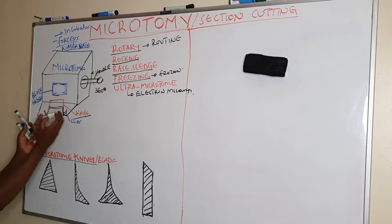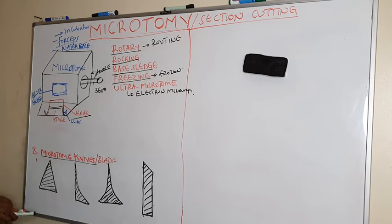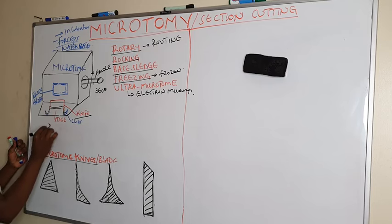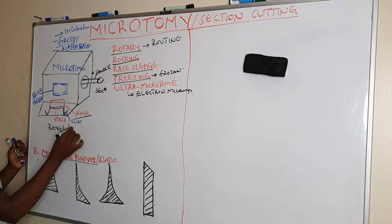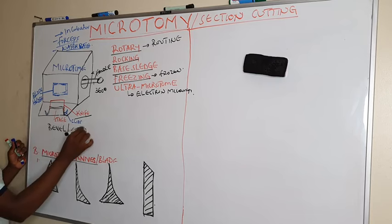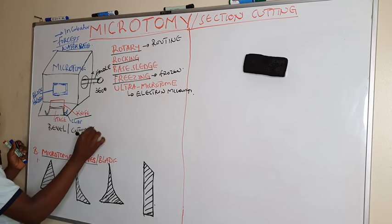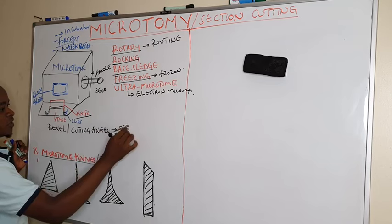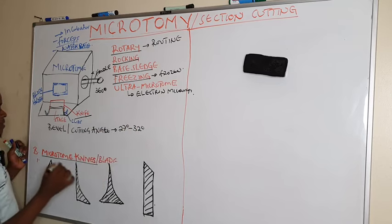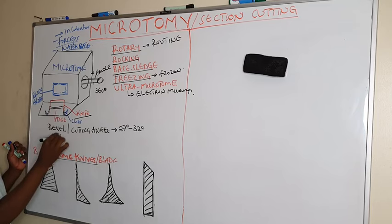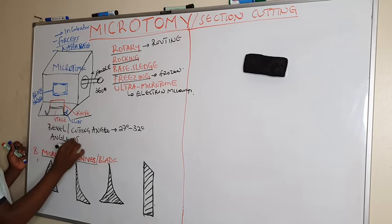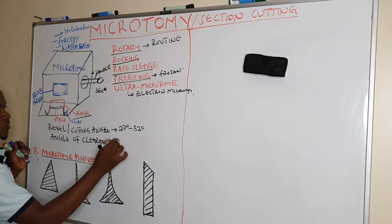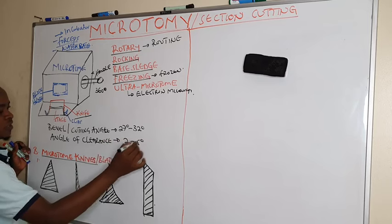When adjusting or fitting the knife on the stage, there are angle terms we use. The bevel angle, also called the cutting angle or facet angle, is always between 27 degrees to 32 degrees. The angle of clearance is always between 2 to 5 degrees.